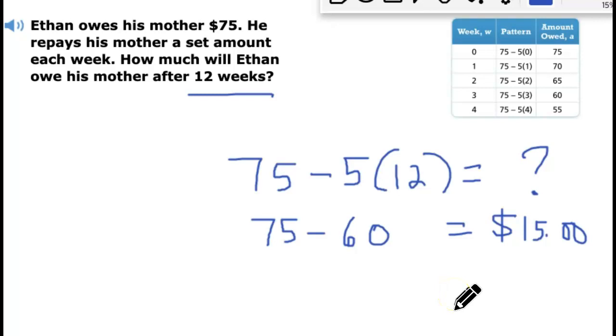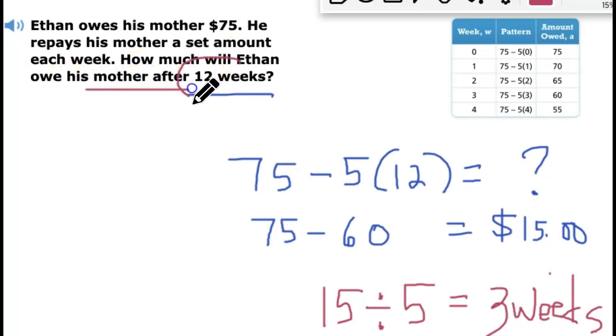If you were asked how many more weeks he can pay off, you could always look back to how much he's paying weekly. He pays $5. At this point, if you want to know how many more weeks, you could just simply divide 15 by the amount he paid weekly. He still needs to pay within 3 weeks. He could pay off the amount he owed for $75. 12 plus 3 weeks, he needs 15 weeks total to pay off. How much will Ethan owe his mother after 12 weeks? Our answer is $15.